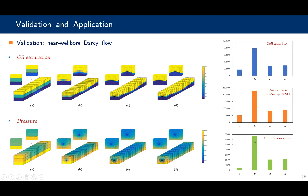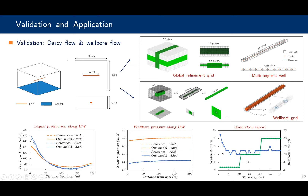Next, we validate the Darcy flow coupled with the wellbore flow. We model a box reservoir with a bottom aquifer and a centrally located horizontal well. A global refinement grid combined with a multi-segmented well is used as a reference. We can see that the liquid production rate and the wellbore pressure along the well match well with the reference.